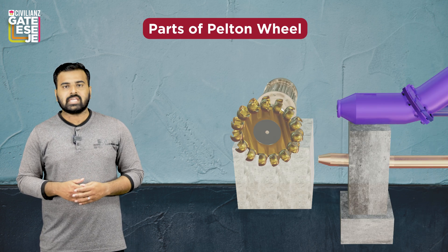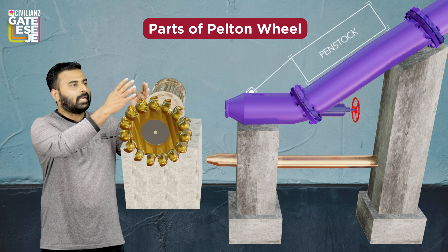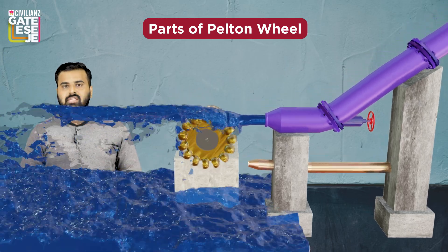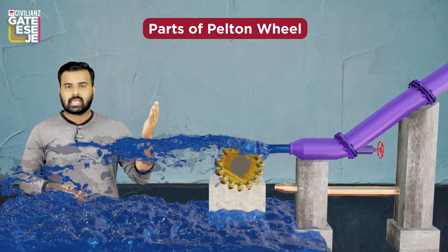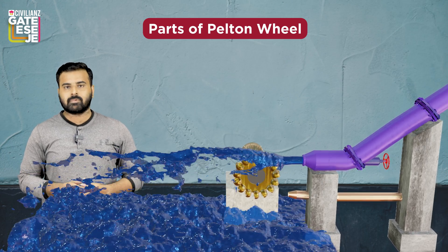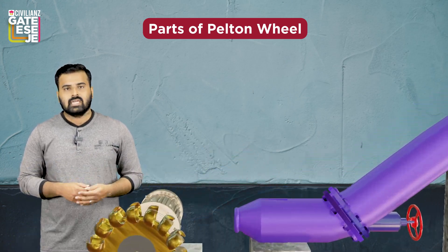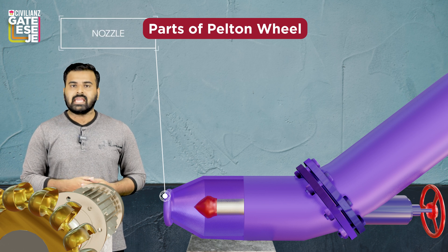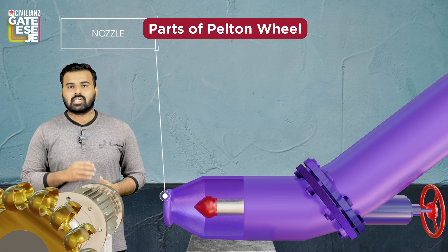Now let's discuss the different parts of the Pelton wheel and their functions. The first part is the penstock. If you see in this video, the long bent pipe of large diameter is the penstock. Its main function is to carry water from the upstream side to the inlet of the turbine. The penstock is generally made up of RCC or steel.